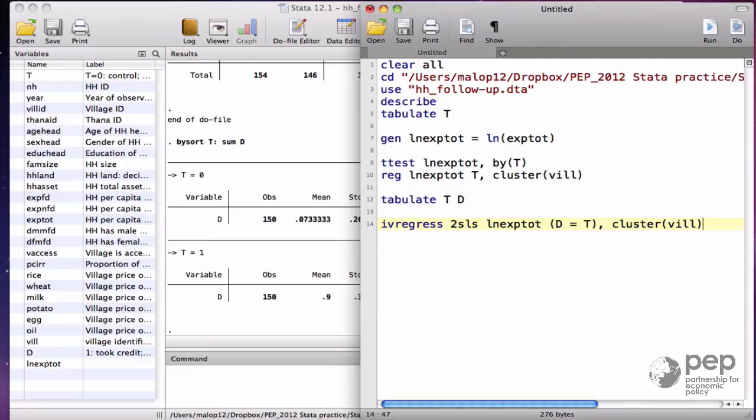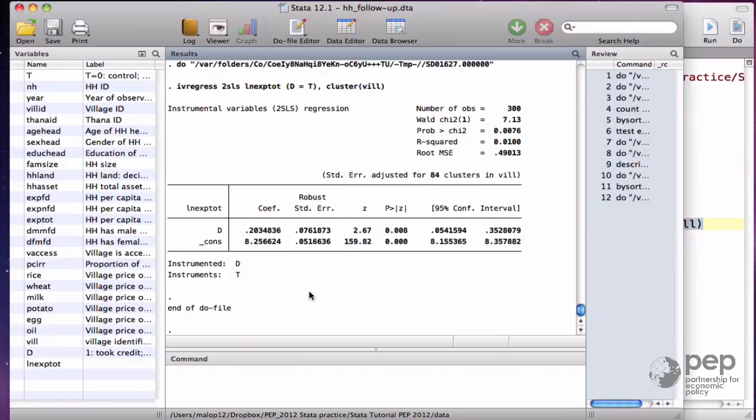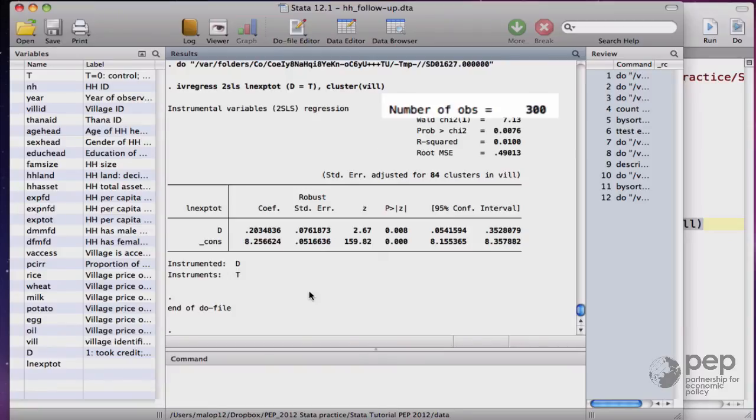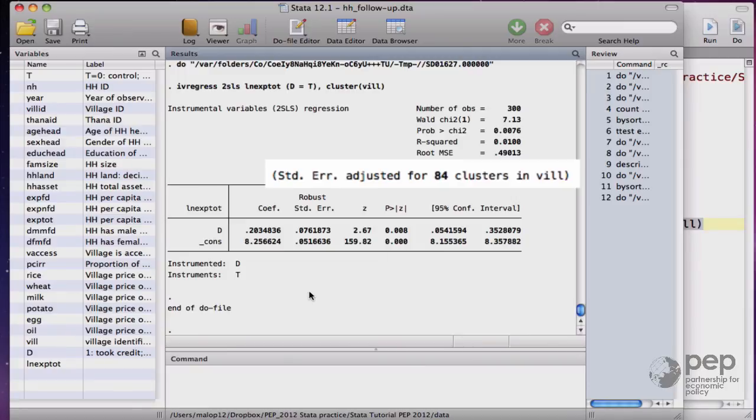Clustering could potentially change your test results from rejecting to not rejecting, but it's not the case here. The output says that we are using an estimation method called two-stage least squares, that we have 300 observations, that there are 87 clusters, the villages.